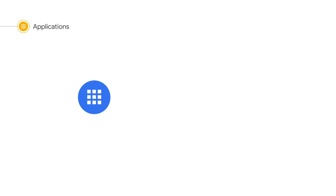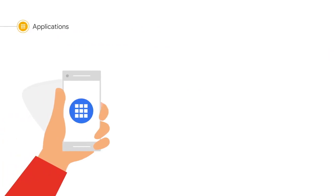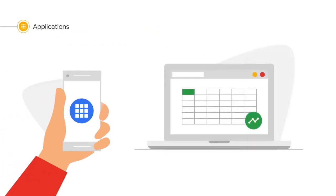We'll talk about business application platforms in a later module. Now let's look at application modernization. The term application is widely used to refer to programs and software that enable people to perform various digital tasks. Apps on smartphones are one example; another is the software you use to create documents, spreadsheets, and presentations.